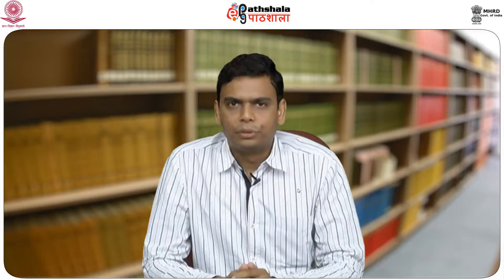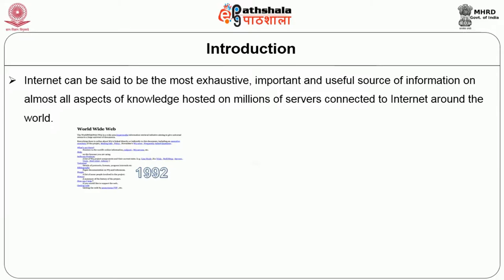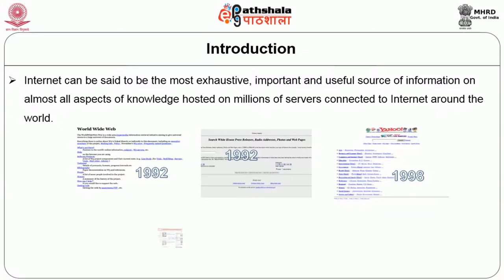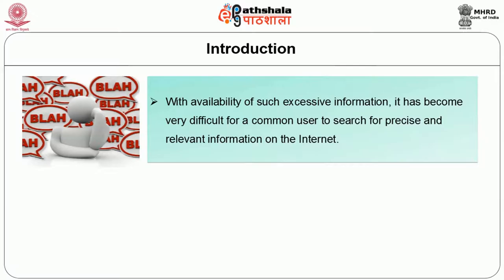The internet can be said to be the most exhaustive, important, and useful source of information in almost all aspects of knowledge, hosted on millions of servers connected to the internet around the world. The World Wide Web started in 1992 with few pages and links and has grown to trillions of pages. The first Google index in 1998 had 26 million pages, which touched 1 billion by 2000, and in mid-2008 it reached 1 trillion unique URLs.